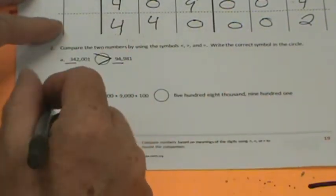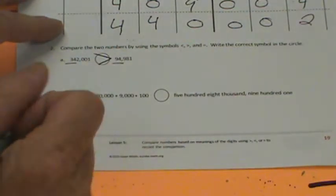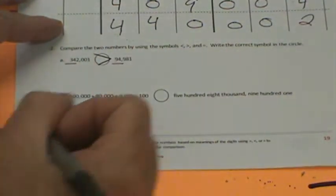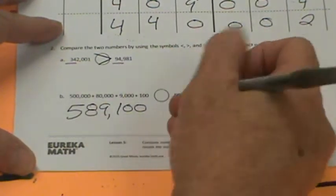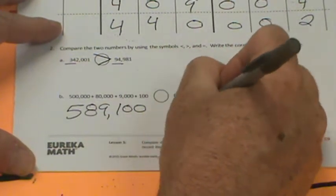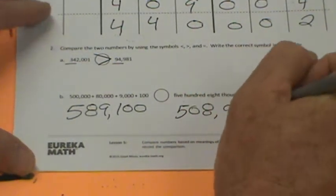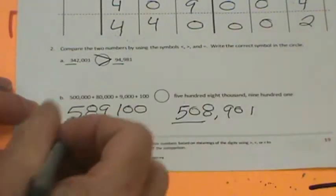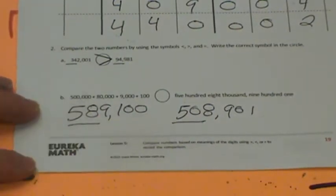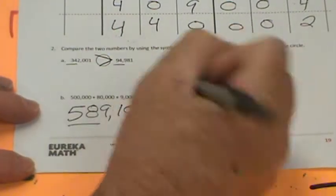They're fooling us here with expanded form and written form, word form. So let's write this out. We have 500,000, we have eight ten thousands, nine thousands, comma, and 100. So 589,100. What's greater right here? We can see now that 508,000, 589,000. Well, I'd rather have 589,000 dollars than 508,000, so 589 is greater.